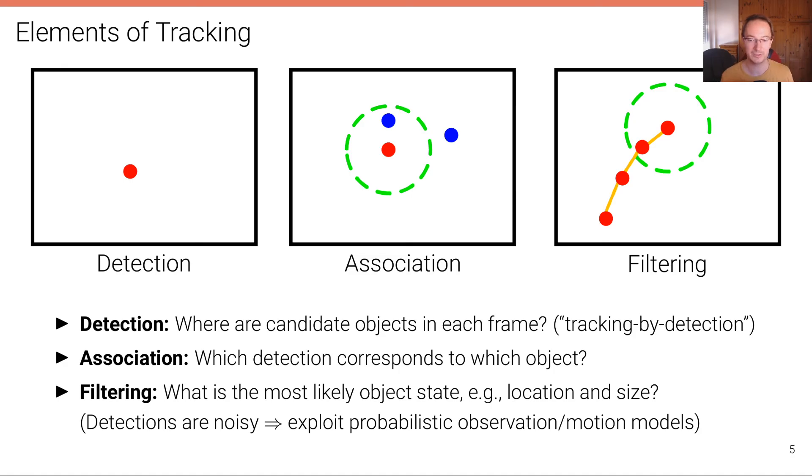But now here we have a tracking problem. So we are observing the object in multiple frames. And we can exploit this to improve the estimate of the object state, for example, the object location. And we're doing this by integrating some prior knowledge, some assumptions, some inductive biases. For example, by exploiting probabilistic observation and motion models, for example, by saying, well, we expect this object to move with a constant velocity. And this is something we can integrate using the base filter that we'll learn about.